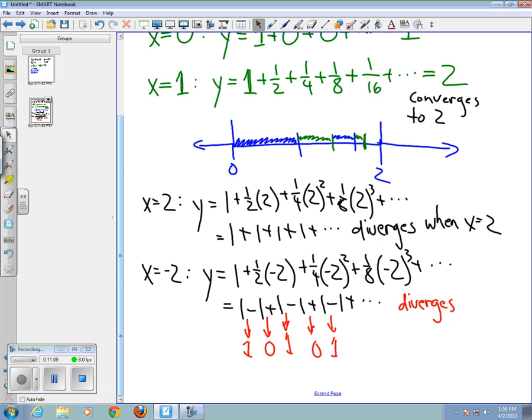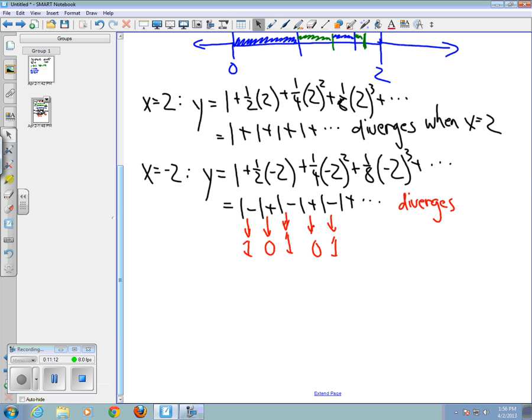One other value that I want to look at is the situation when x equals negative one. And by means that you learned, if you took a class involving sequences and series before, there's a way to show that in this case what we have is y equals one plus one-half times negative one plus one-fourth times negative one squared and so on, which turns out to be one minus a half plus one-fourth minus one-eighth plus one-sixteenth and so on.